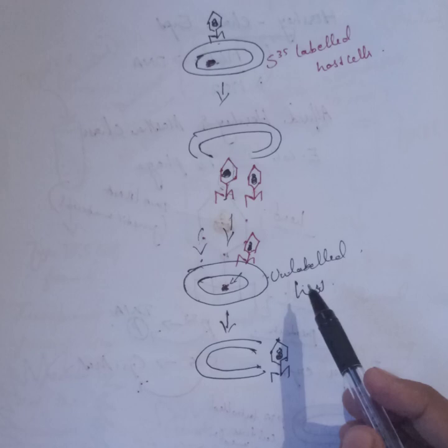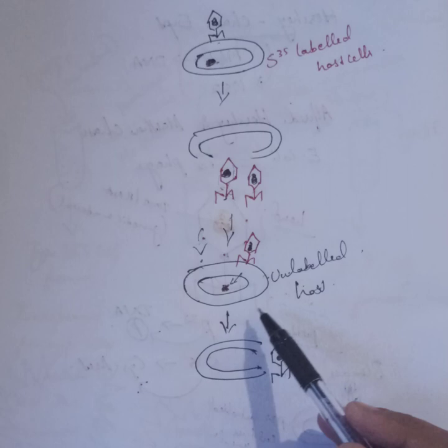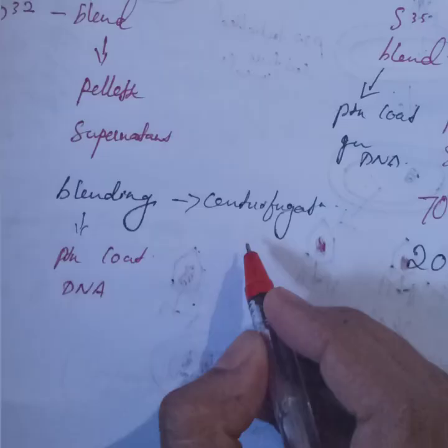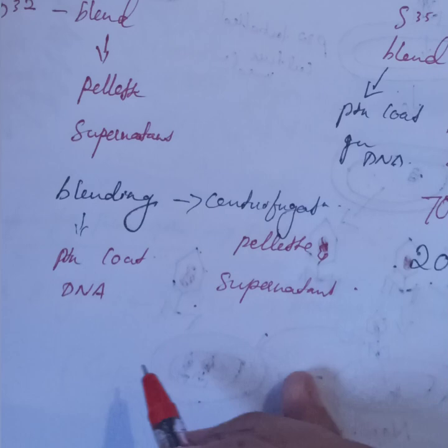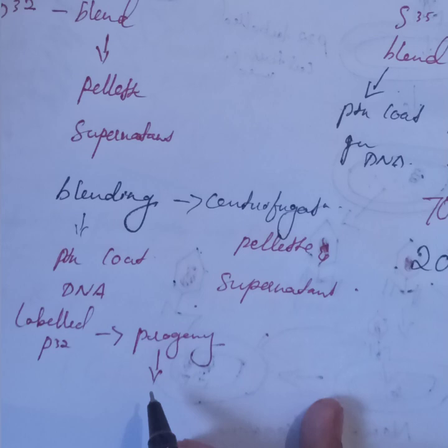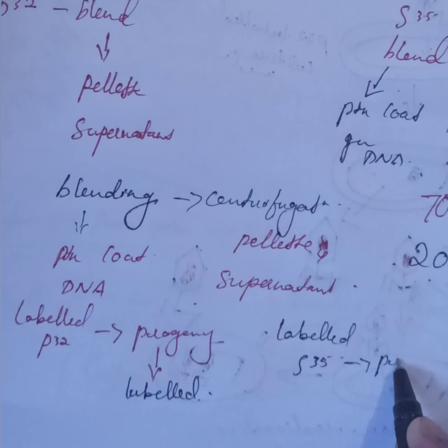After reproduction, the host cell lysis releases progeny phages that contain no S35-labeled protein — because only DNA entered the host cell, which was unlabeled. From this we can understand the genetic material is not protein, it's DNA. If it were protein, it would pass from one generation to the next to maintain hereditary characters. After centrifugation — the third stage — it is revealed that the pellet contains more than 70% of P32-labeled particles (DNA) and the supernatant contains more than 80% of S35-labeled particles (proteins).